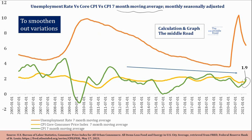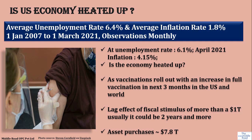Looking at how inflation and the unemployment rate have been moving in the United States: the unemployment rate was 6.4 percent on average between January 1, 2007 and 2021. Of course, this figure is somewhat distorted because during that period you had the Great Recession and the pandemic — there were outlier moments. However, we can observe that during recession the inflation rate would go down. The unemployment rate in April was 6.1 percent and inflation is at 4.15 percent.